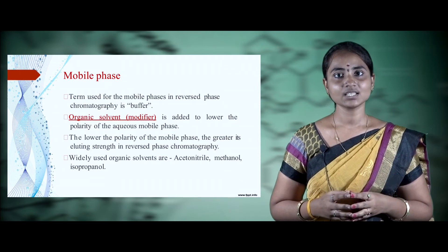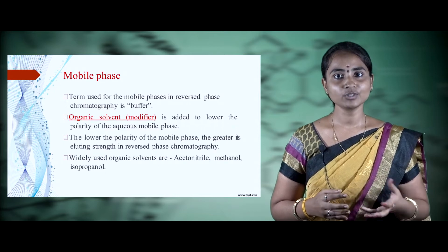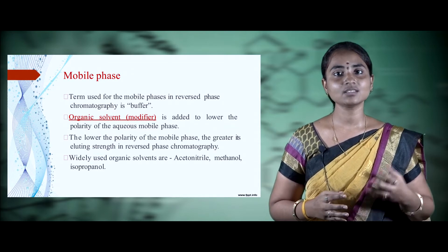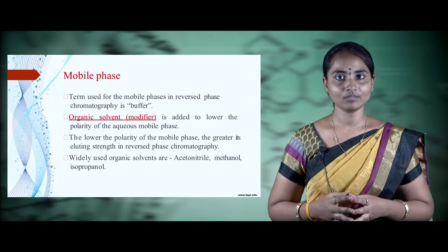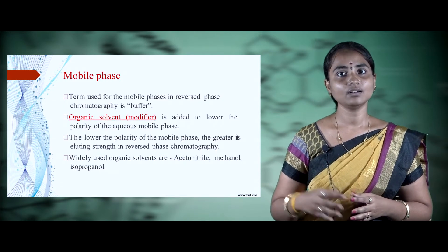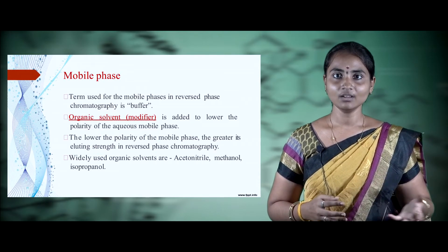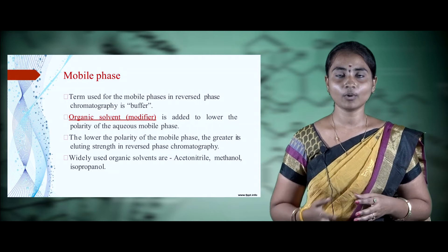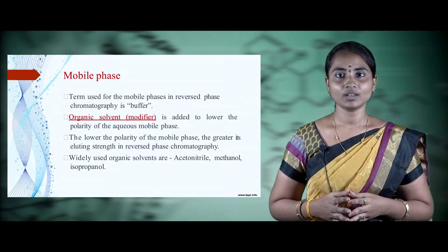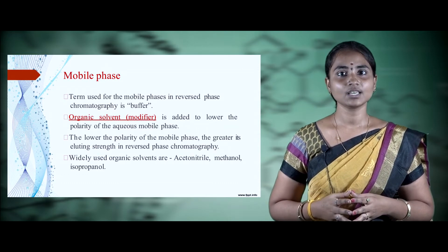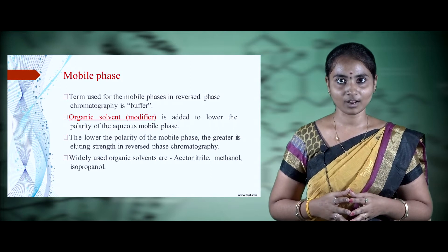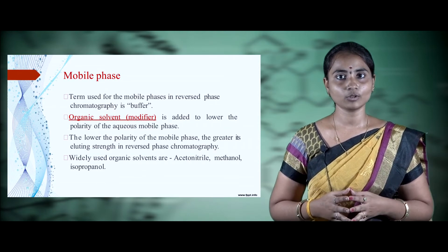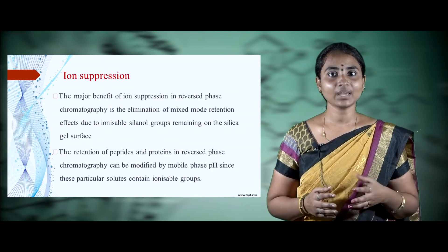The mobile phase used in reverse phase chromatography is also called buffers, as it highly depends on the elution of different compounds. Elution of different compounds is based on changing pH values — high pH values use strong buffers, and low pH values use weak buffers. These buffer changes elute compounds at different retention time periods. Organic solvents are used as buffers, also termed modifiers, to lower the polarity of the aqueous mobile phase. Lower polarity gives greater eluting strength. Commonly used organic solvents include acetonitrile, methanol, and sometimes isopropanol.